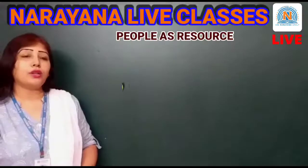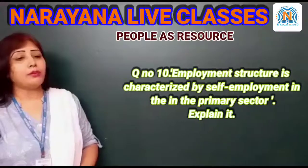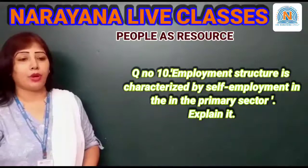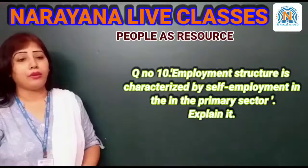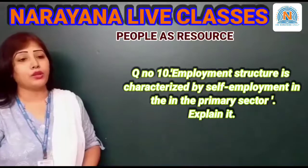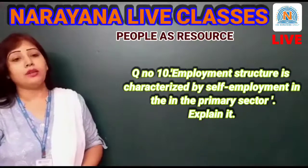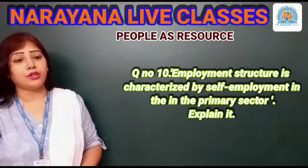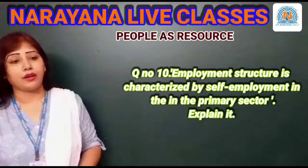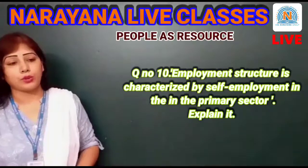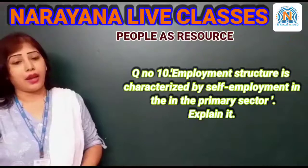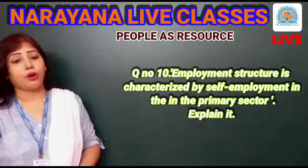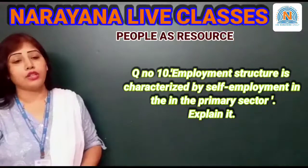Question number ten: Employment structure is characterized by self-employment in the primary sector — explain. The whole family contributes in the field even though not everybody is really needed, resulting in disguised unemployment in the agricultural sector. All family members share what has been produced. The concept of sharing work and produce reduces the hardship of unemployment in rural areas, but does not reduce the poverty of the family.